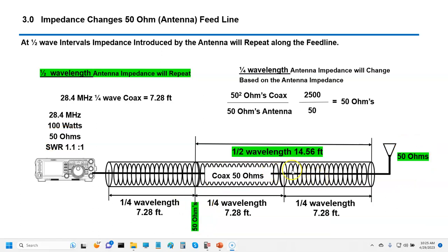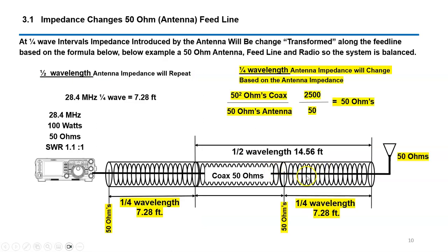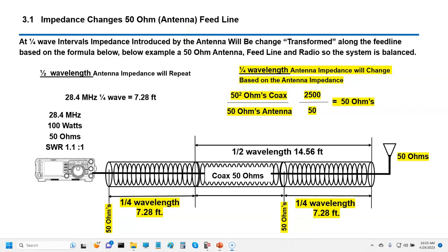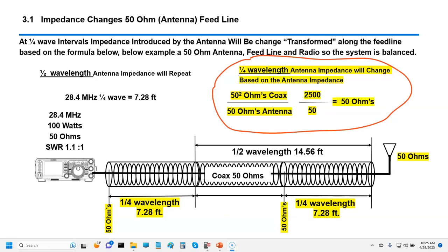At a quarter wavelength, something a little different happens — a formula comes into play. This transformation involves a specific formula. In our example with a 50-ohm antenna and 50-ohm coax, we have a balanced feed line with 50-ohm impedance across the antenna, coax, and radio. Let me show you what happens from a voltage standpoint.